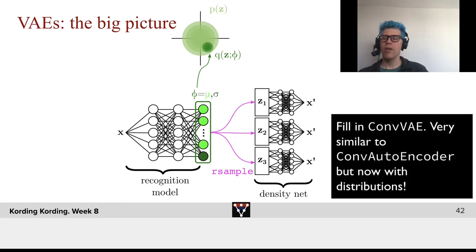Now it's your job. Fill in the ConvVAE. It's going to be very similar to the convolutional autoencoder, but now with more distributions.